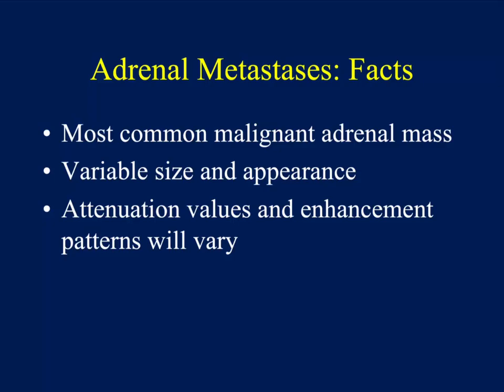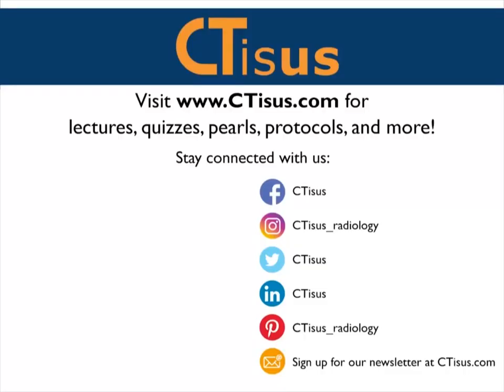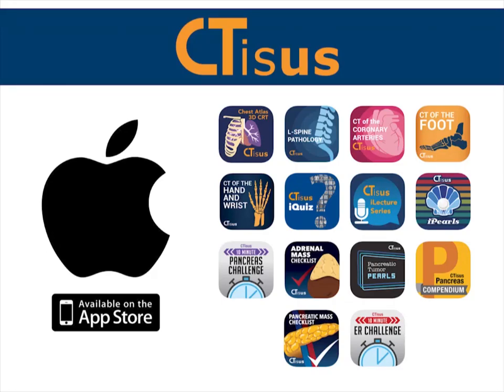To summarize: think about big masses — ACC, lymphoma which can be bilateral when it's primary adrenal lymphoma, and some unusual sarcomas. The sarcomas are very rare, so you don't need to typically worry about them, but every once in a while you'll get back a pathology report with one of those wild diagnoses. See you in a few videos on the YouTube channel. You can also visit us at ctss.com for even more videos, plus quizzes, pearls, protocols, and much more. We're also in the App Store with well over a dozen apps for iPhone and iPad, all completely free. Thanks for watching.